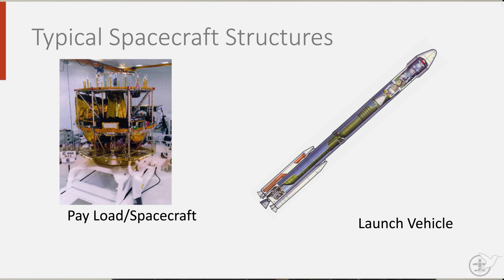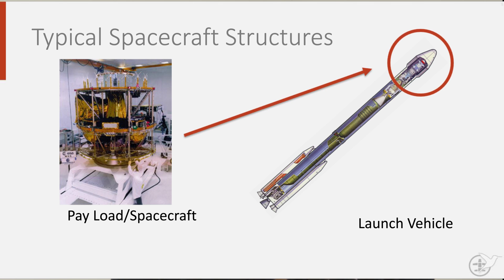A launch vehicle is a transporter of spacecraft, often a rocket such as the US-built Saturn V, the Falcon 9 from SpaceX, the European Ariane 5, the GSLV from India, and the Russian Soyuz rocket. They often burn up after launch, although reusable launch vehicles are slowly entering the market.